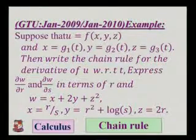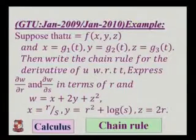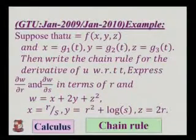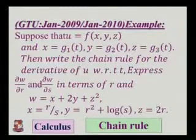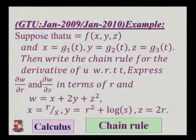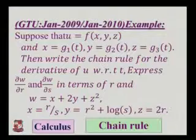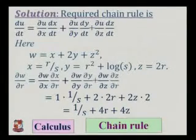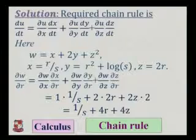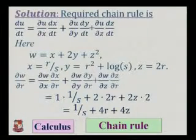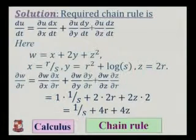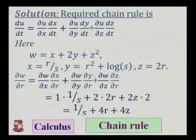Express del w by del r and del w by del s in terms of r and s, where w equals x plus y times (2y plus z square), x equals r by s, y equals r square plus log s, and z equals 2r. The required chain rule is: du by dt equals del u by del x into dx by dt, plus del u by del y into dy by dt, plus del u by del z into dz by dt.